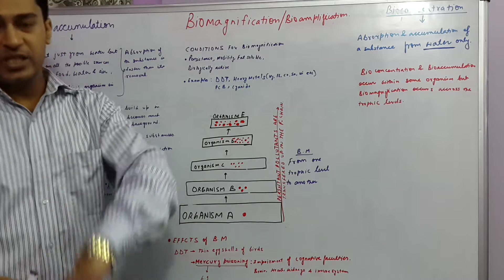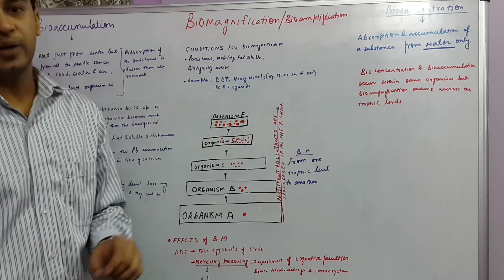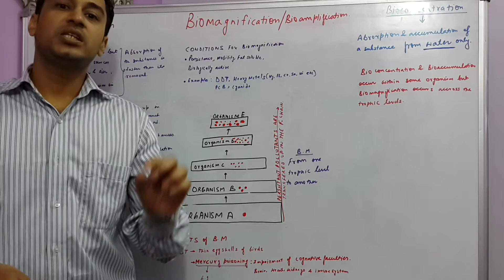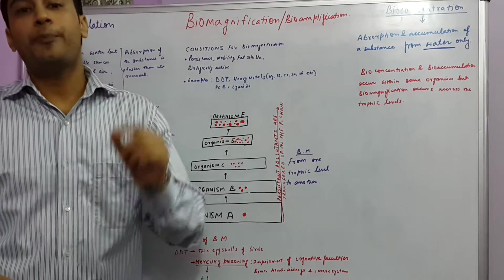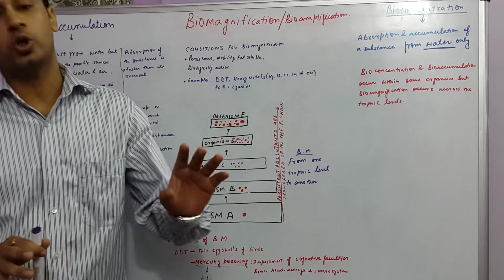Now there are certain conditions which are required for biomagnification or bioamplification to occur. These are that the pollutant should be persistent. That is, it should be able to survive for long in the body and should not break down.